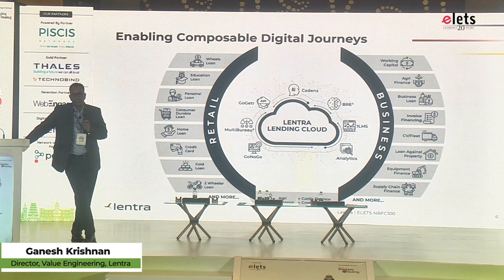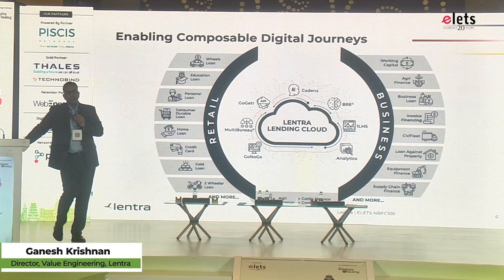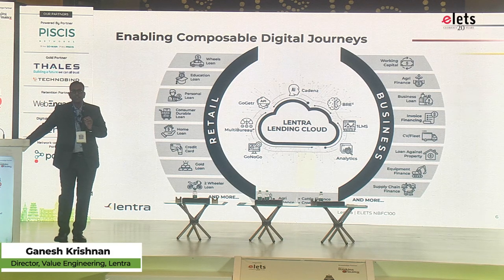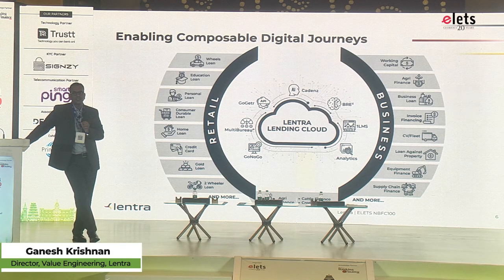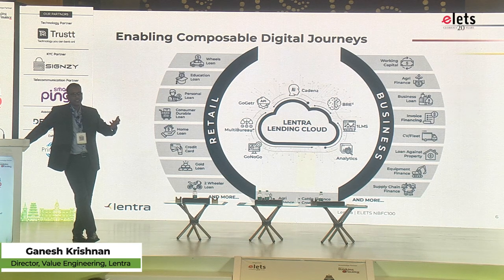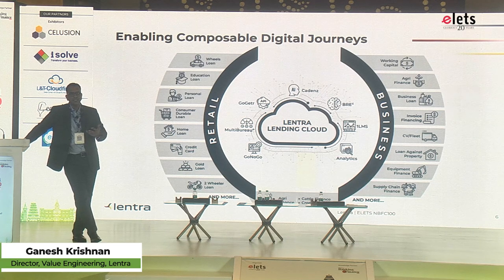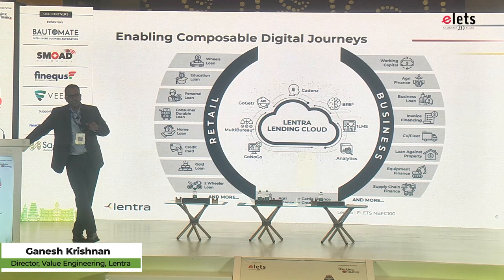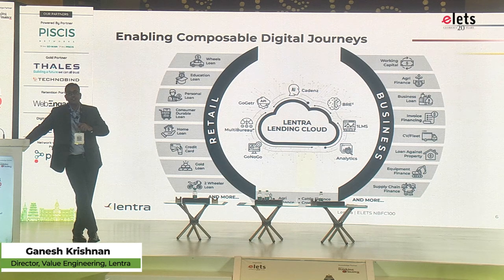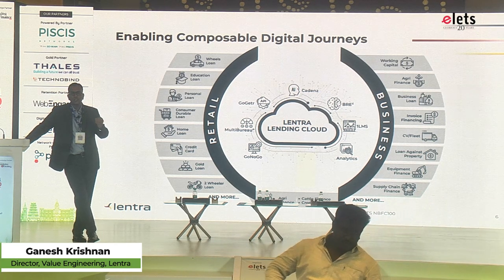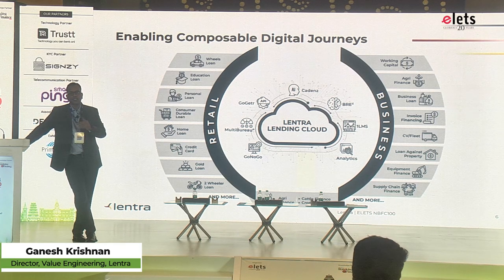BRE — the Business Rule Engine — is what we call a unified credit decisioning system, wherein you take data from your bureau, from a third-party source, from your loan origination system, and you build rules — your credit rules, deviations, or even scorecards — for different personas, and execute them at any stage of the workflow of the case.